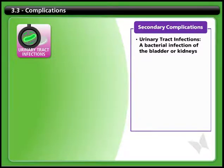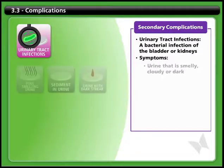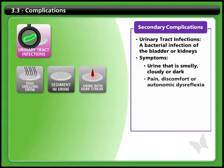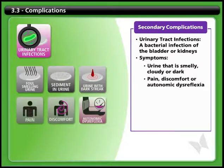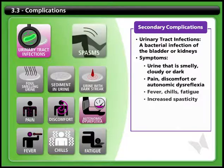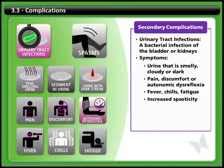Signs that you may have a UTI can vary. Typically they include things like urine that is foul-smelling, cloudy with sediment, or dark with blood; pain, discomfort, or autonomic dysreflexia; fever, chills, or fatigue; and increased spasms. Over time you may come to recognize patterns of symptoms that are typical for you.